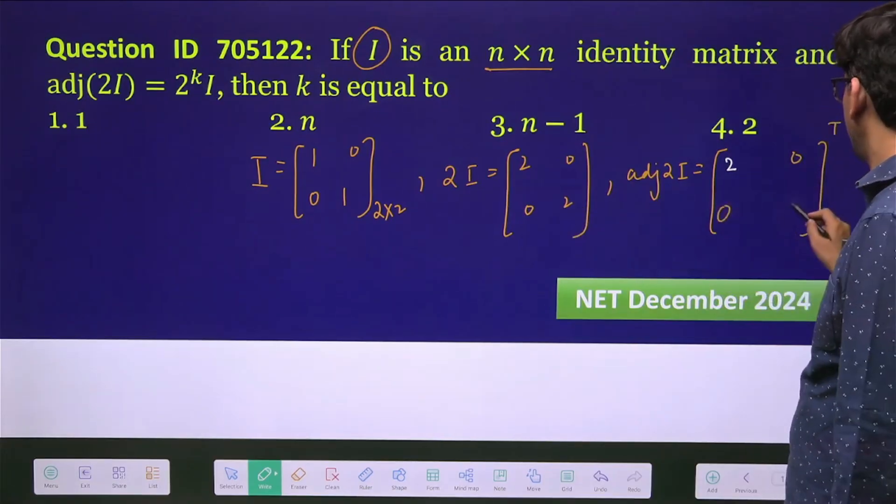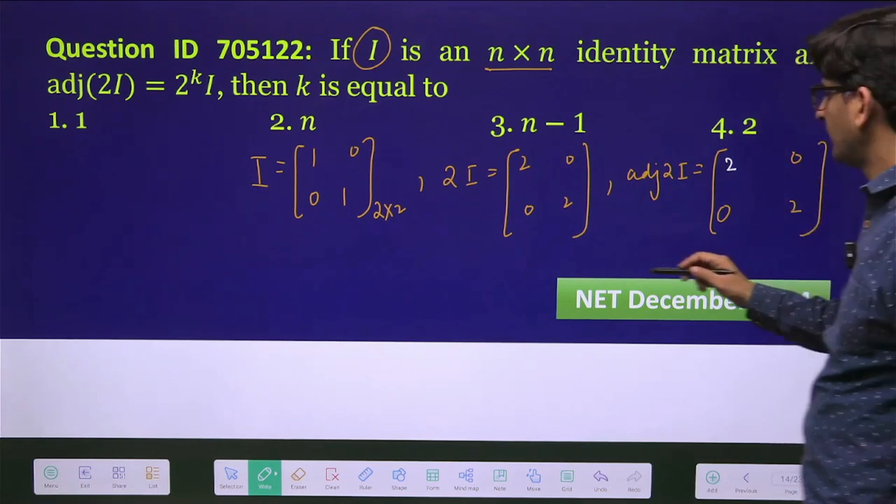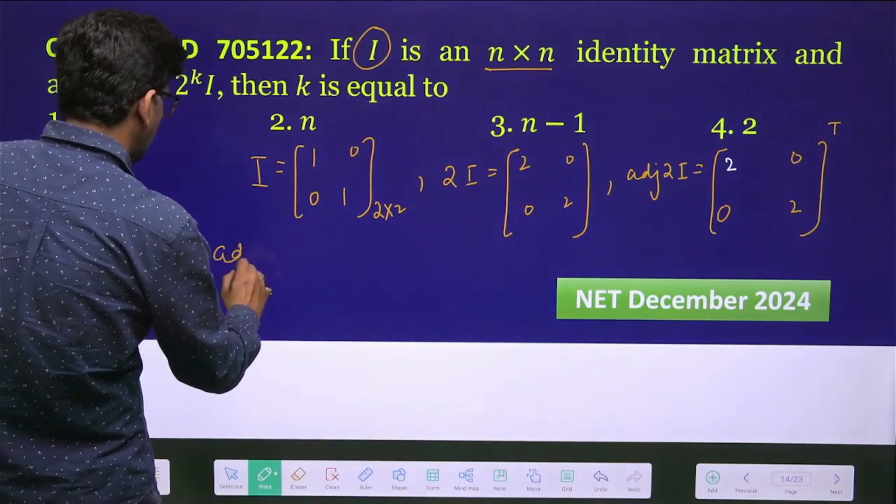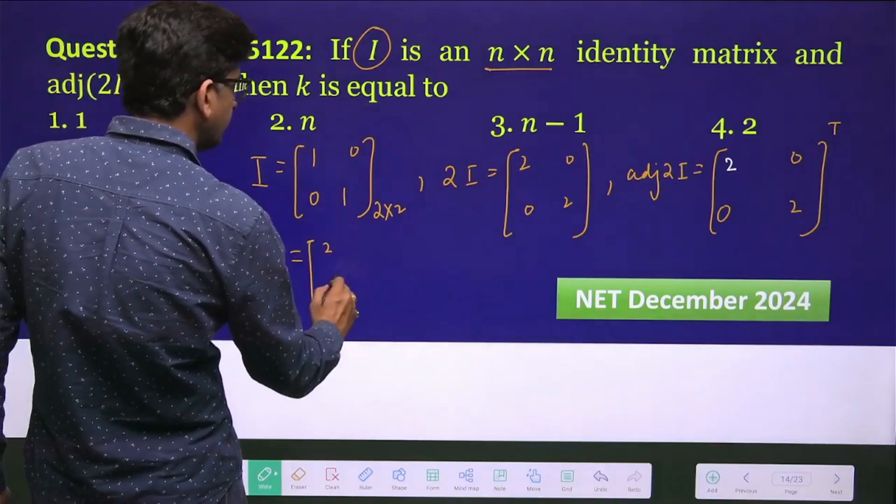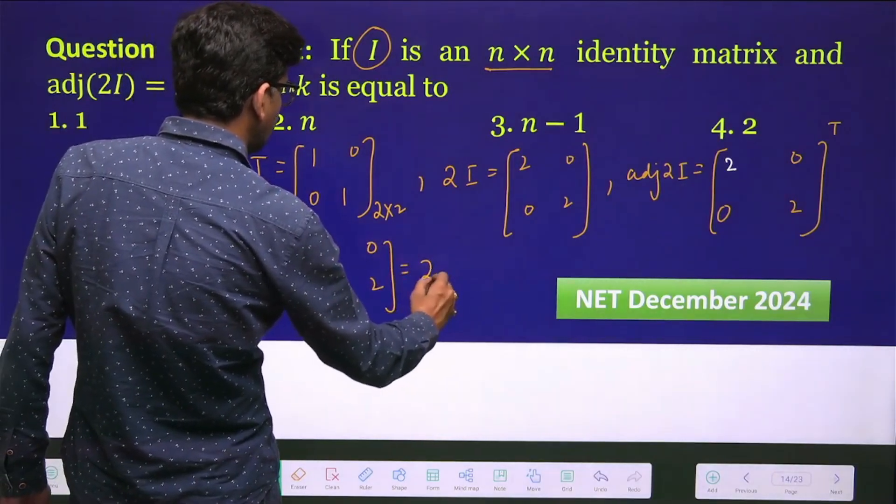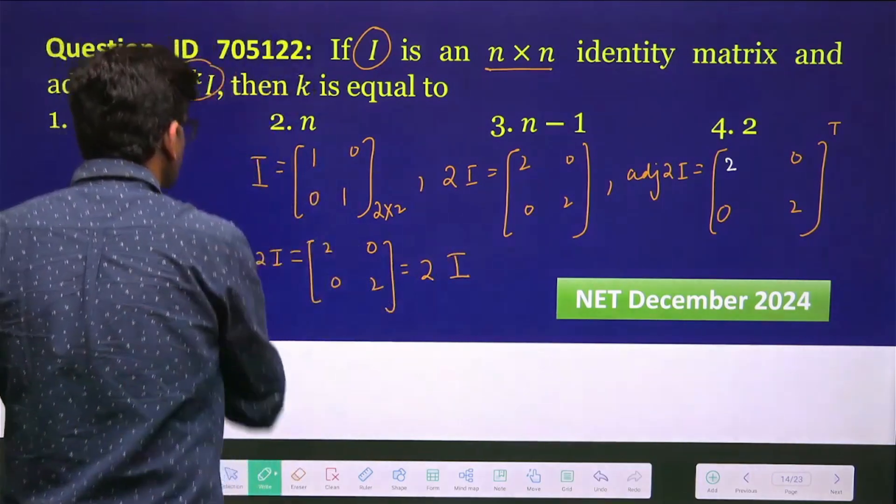So take the transpose. You will get adjoint of 2I will become [2 0; 0 2], which is 2 times I. And I have to write it like this: 2^k·I.